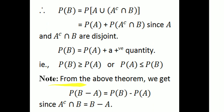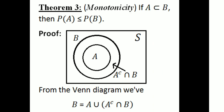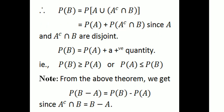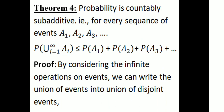One note from the above theorem: P(B - A) = P(B) - P(A), where B - A is the region in B but not in A. Since Aᶜ ∩ B = B - A, we have P(B - A) = P(B) - P(A).